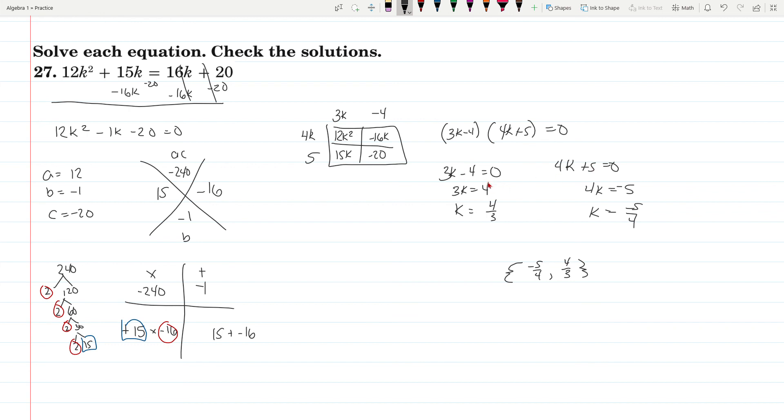Add the 4, divide by 3, you get 4 thirds. Subtract the 5, divide by 4, you get negative 5 fourths. So negative 5 fourths and 4 thirds are your solutions.